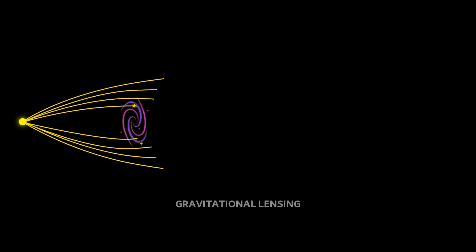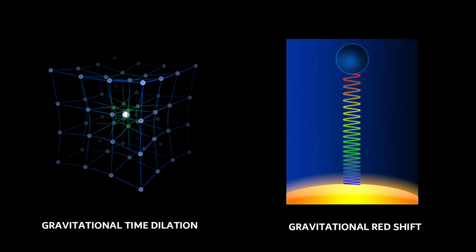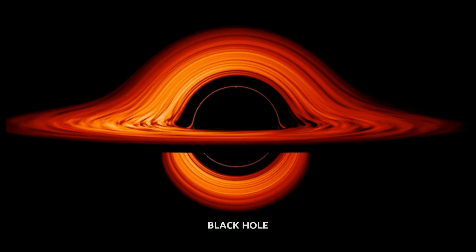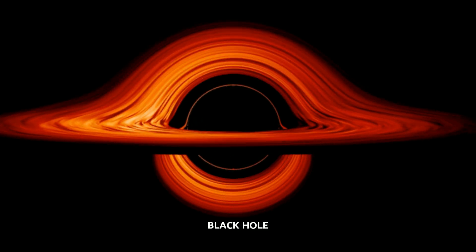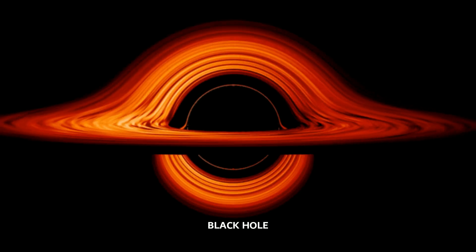Einstein essentially said that gravity is the consequence of the motion of objects in curved space-time. This idea explains phenomena like gravitational lensing, gravitational time dilation, gravitational redshift, and even the existence of black holes — it is General Relativity that predicted objects like black holes can exist in our universe. General Theory of Relativity is essentially the modern physics explanation of the large-scale universe.